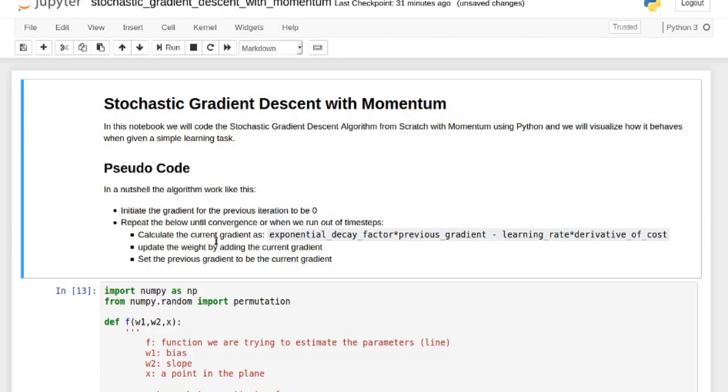And then we're going to repeat this thing until we converge or we run out of time steps. So what you do is you calculate the current gradient as this thing, the exponential decay factor times the previous gradient. So this is 0.9 approximately minus the learning rate times the derivative of the cost. And you update the weight by adding this thing to the weight. And then you set the previous gradient to be the current gradient. And remember, we're still doing stochastic gradient descent, so we're still taking only one data point at a time.